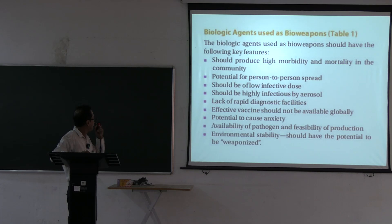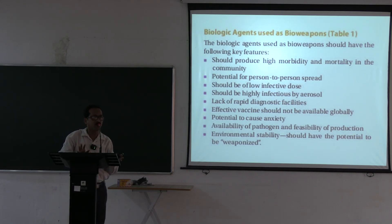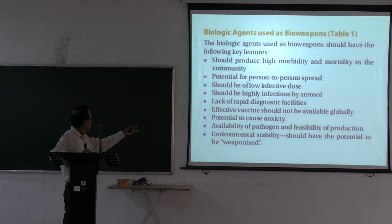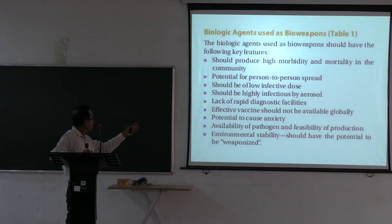A vaccine should not be available globally. It should have the potential to cause anxiety and panic among the population. Other key characteristics include availability of the pathogen and feasibility of production.